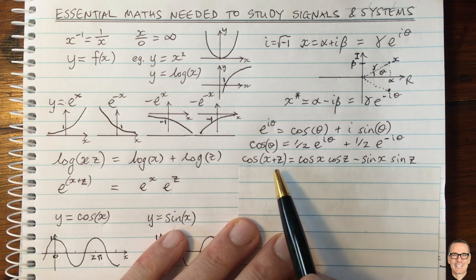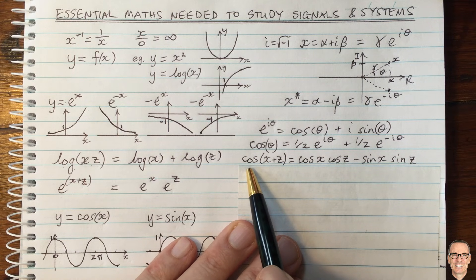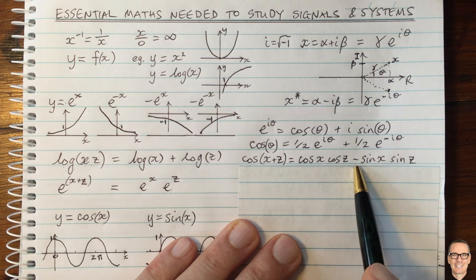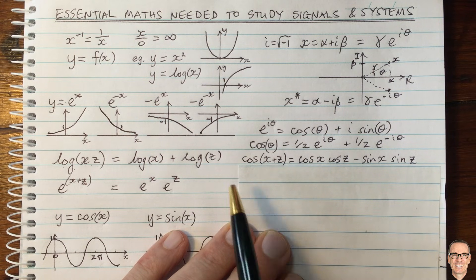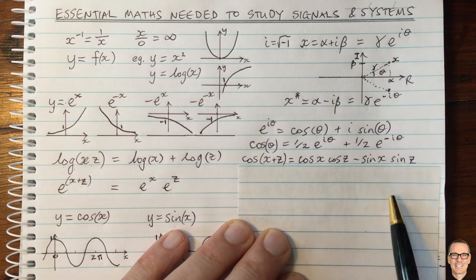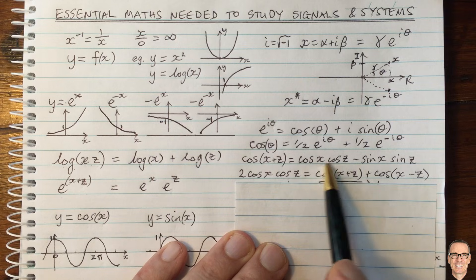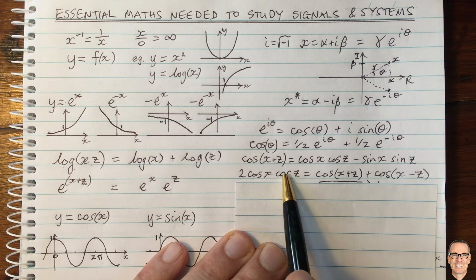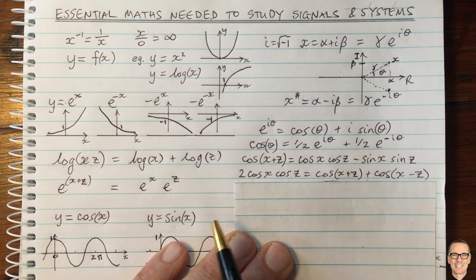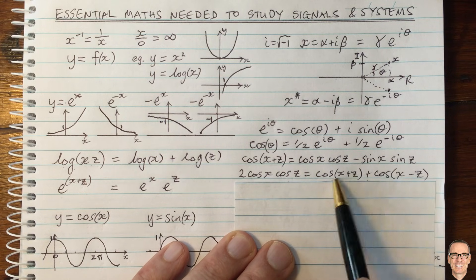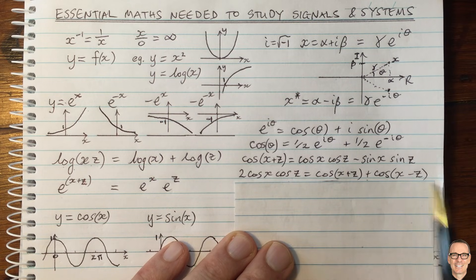Another set of expressions important for signals and systems are the trigonometric addition formulas. For example, cos of x plus z can be written as cos x cos z minus sine x times sine z. There are all the different combinations of this for x minus z or when using sine instead of cosine. Going the other way, when you have products of cosines and sines, you can rewrite them in terms of summations. These product-to-sum identities are also important, and you can look all those up.